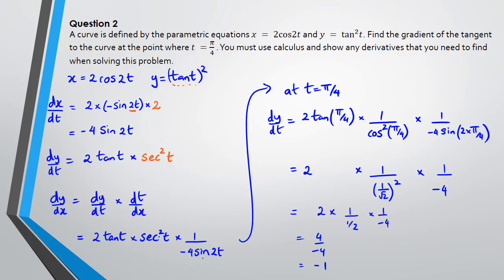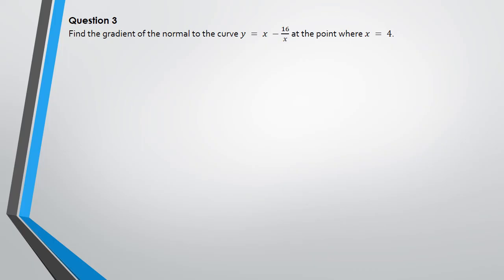This is a merit question — if you end up with the correct gradient you're looking at a merit, but even getting one of the two derivatives correct looks like an achieved. Now for the next question: find the gradient of the normal to the curve y = x - 16/x at the point where x = 4. We need to differentiate y, find the gradient, then take the negative reciprocal to get the normal.